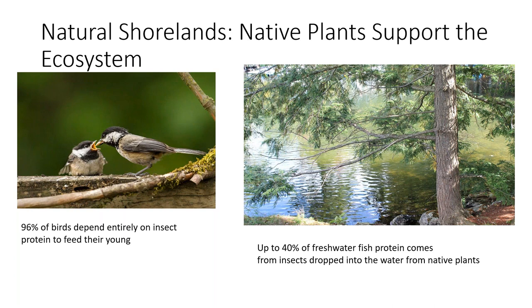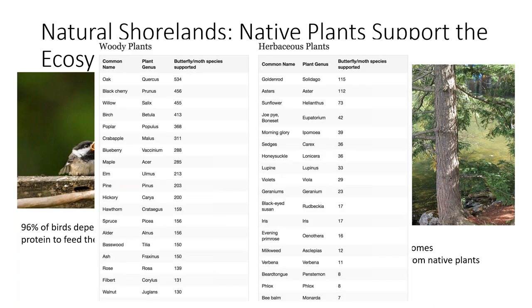Freshwater fish in lakes get 40% of their protein from insects that fall off the branches of native trees. The trees also provide shade, and woody debris falls into the water providing more habitat for fish. So the type of vegetation on a shoreland is very important — and all vegetation is not created equal. Even among native plants, some provide far more insect species and food sources than others.